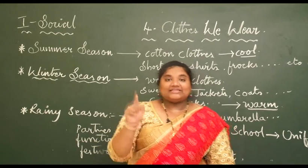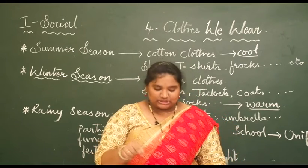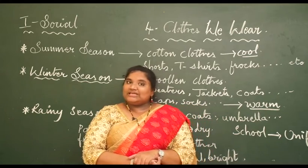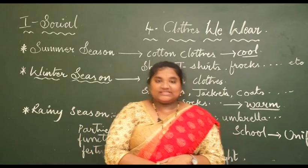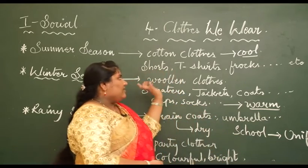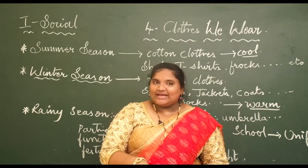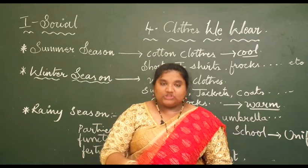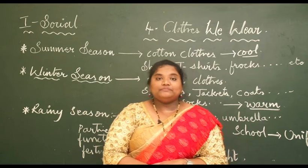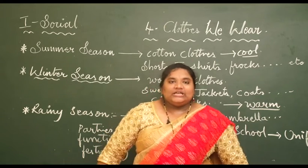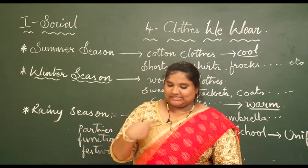In the next activity, you have beautiful pictures of clothes in your textbook. In the small boxes, write S for summer and W for winter. First is a scarf made from wool — we wear it in winter season, so W. Next is a cotton frock — we wear it in summer season, so S. Next is a jacket which keeps our body warm — worn in winter season, so W. Next is a skirt — a cotton skirt worn in summer season, so S.